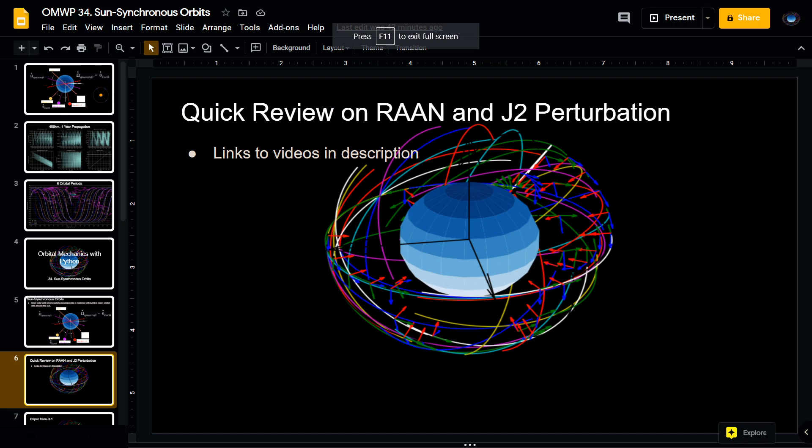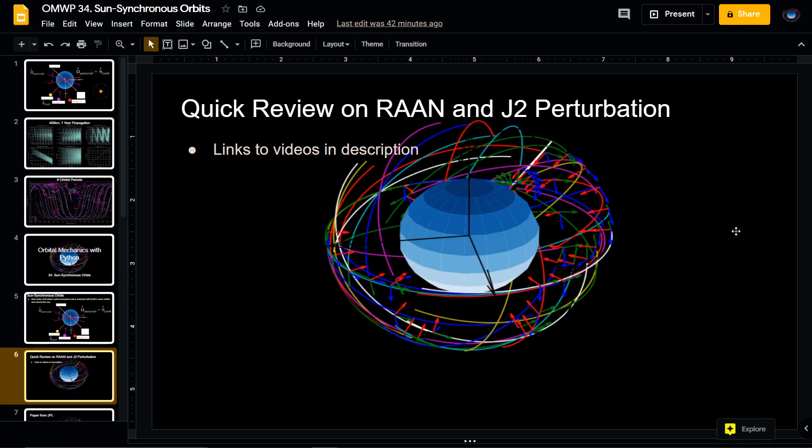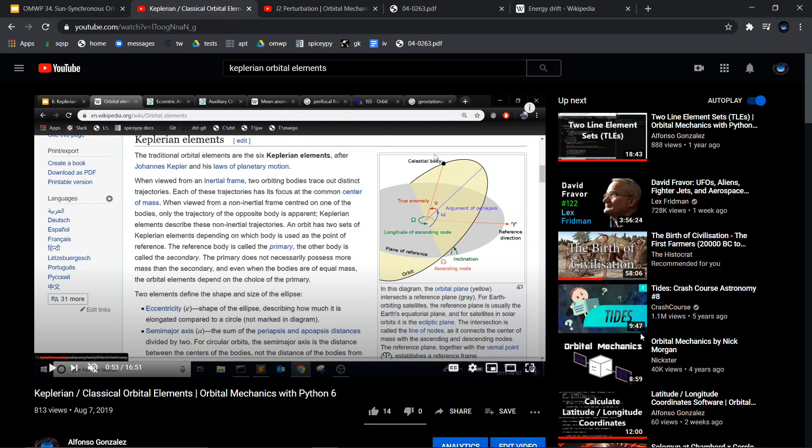A quick review on right ascension and the J2 perturbation from my previous videos. The right ascension is defined at this angle between the reference direction, which is the first point of Aries in the Earth center inertial frame, that angle to the ascending node, where the ascending node is defined as where the orbital plane crosses up through the plane of reference, which in the Earth center equatorial frame is the equatorial plane of the Earth.